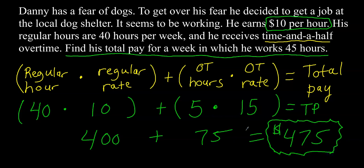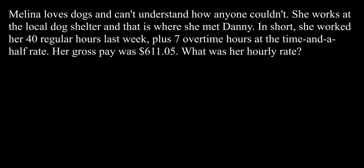Let's go to problem four. Molina loves dogs and can't understand how anyone couldn't. She works at the local dog shelter — and that is where she met Danny. She worked her 40 regular hours last week plus 7 overtime hours at the time and a half rate. Her gross pay was $611.05. What is her hourly rate? Underline the final question — I want to know her regular rate. I don't know it in this problem, but I do know her gross pay, so we'll need to use some algebra.